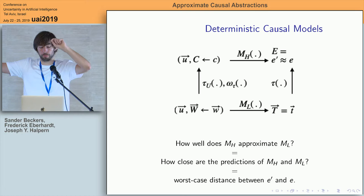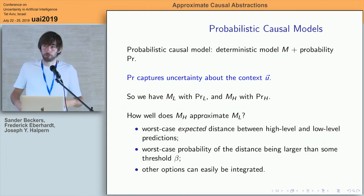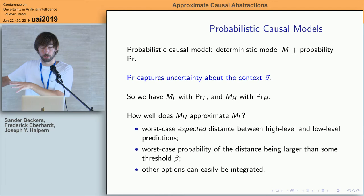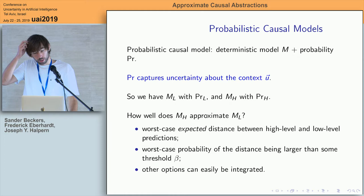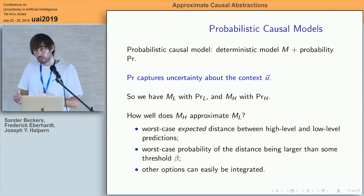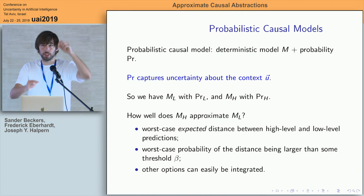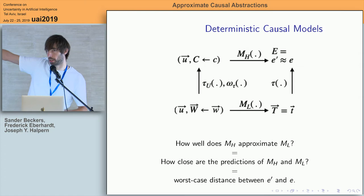We went for worst case — that's a choice; you can make other choices, so the framework is flexible. This is for deterministic causal models, where for a particular context you have a unique solution. What's more interesting is the probabilistic case. A probabilistic causal model is essentially a deterministic model M plus a probability distribution over the background context — the exogenous variables — capturing the uncertainty about which context you're in. Extending to this case allows much more interesting notions of approximation: the worst-case expected distance over all possible interventions, or alternatively, a threshold beta where you care about reducing the probability of ever exceeding that threshold.